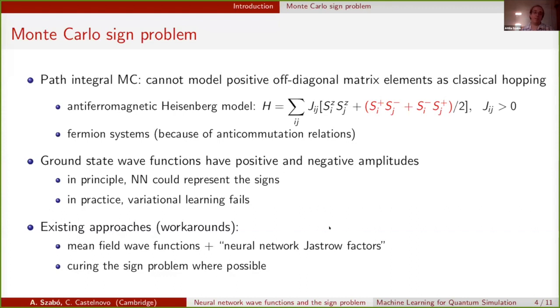There are many approaches around it. I call them workarounds because what I'm trying to do is to learn the signs directly. What one can try, for example, is to take a wave function which has a physically well-motivated sign structure, such as fermionic mean field wave functions, or their Gutzwiller projected versions if one tries to work on a spin system, and use the neural networks as a sort of Jastrow factor, and hope that they might learn some of the residual sign structure which is between the mean field wave function and the true wave function, but really they are just there to improve on the amplitudes.